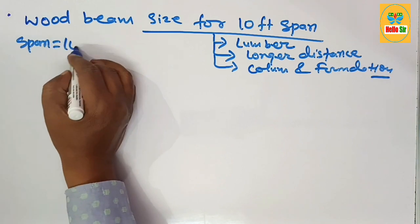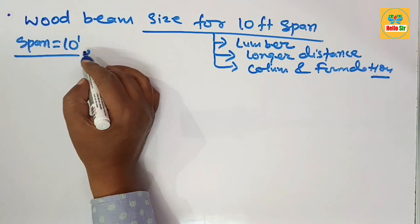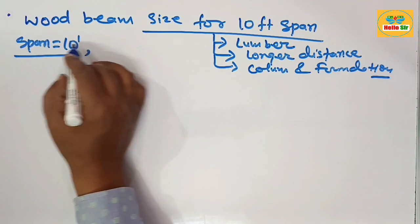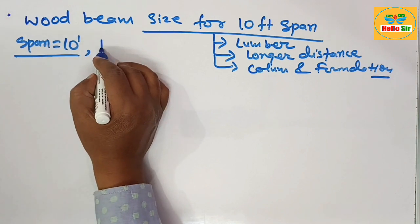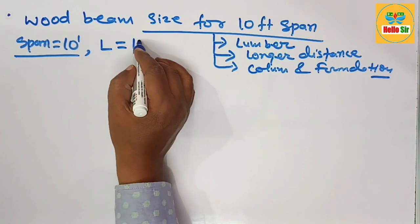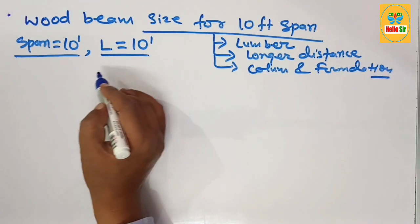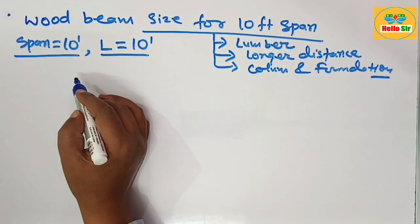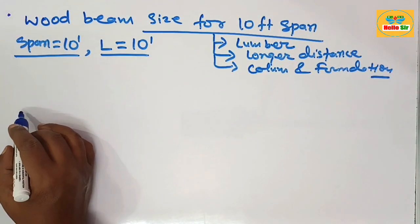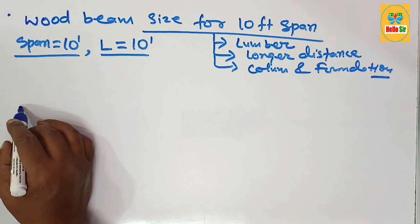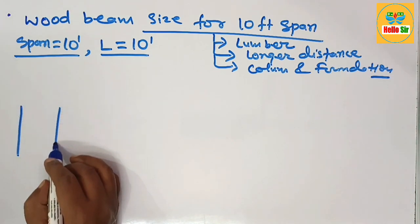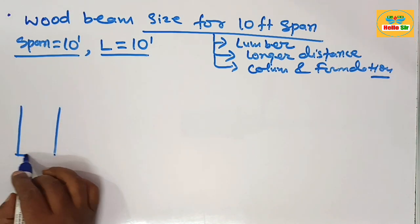The given span length of the wood beam is 10 foot, so the length of the wood beam required should be equal to 10 foot. We need to find the depth and width sections of the beam. Here we make a rough diagram to understand the different dimensions of the wood beam.